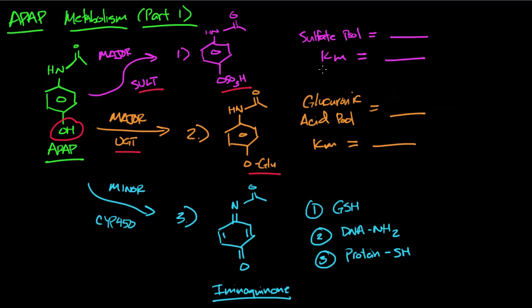Those two pathways, pathways one and two, sulfotransferase and UDP-glucuronosyl transferase, those are your major metabolic pathways for acetaminophen.